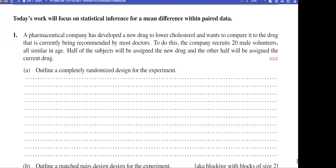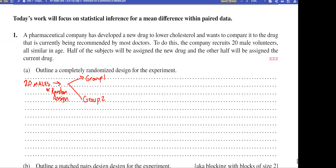For our completely randomized design, we are going to have 20 males. From the 20 males, we are going to have random assignment into two groups. We'll call them group one and group two, with 10 within each of these groups. From there, one group will get the current drug and the other group will get the new drug.